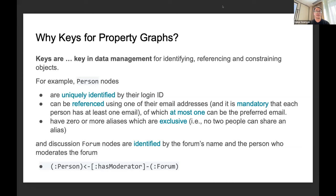A person might have zero or more aliases which are exclusive to them, so no two people can share an alias. We can go further beyond just local properties of a person node. For example, a discussion forum node is identified by its name and also the identity of the person who moderates the forum, the person on the other end of the moderator edge.